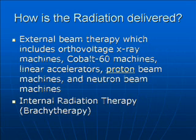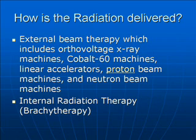How is radiation delivered? External beam therapy, which includes orthovoltage x-ray machines, cobalt-60 machines, linear accelerators, proton beam machines, and neutron beam machines. There is also internal radiation therapy, which is also known as brachytherapy.